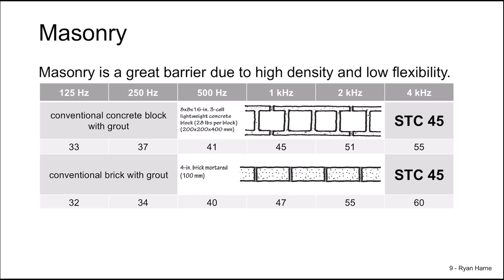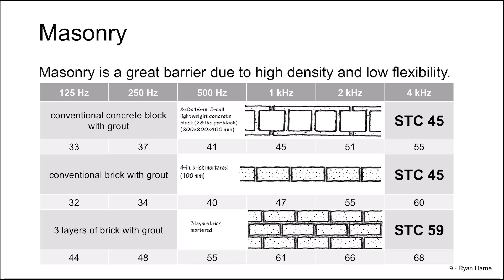But when you work out the STC ratings, they are the same. They both have an STC of 45. Of course, there are other differences in the selection between a concrete wall and a brick wall, for instance thermal considerations to take into account.